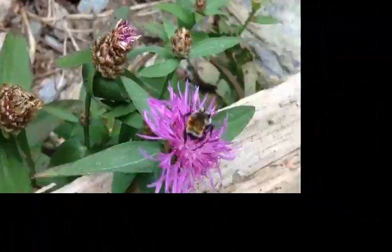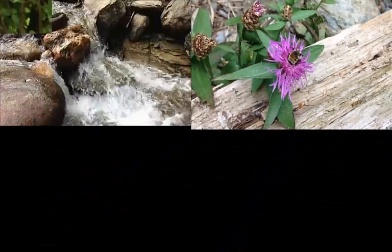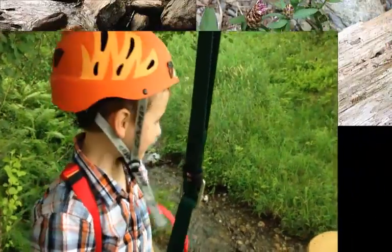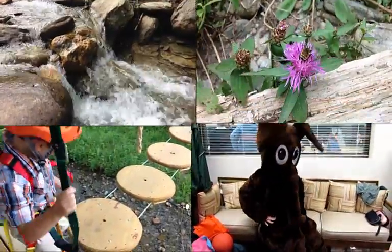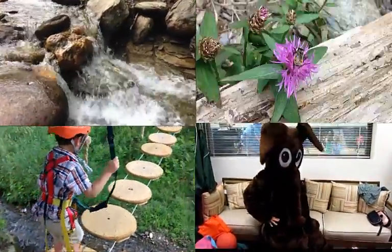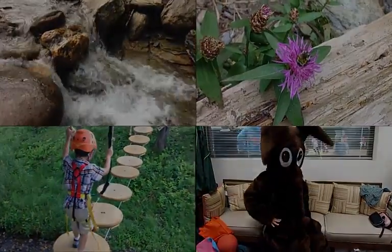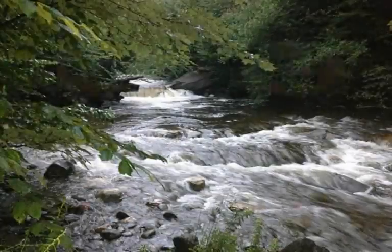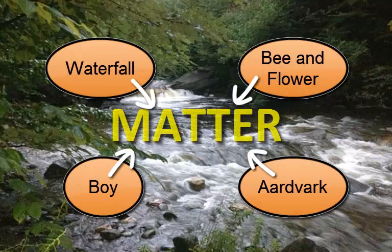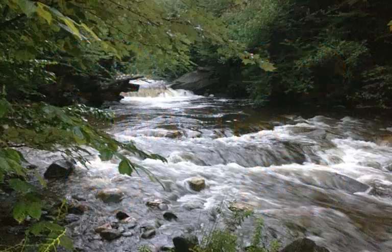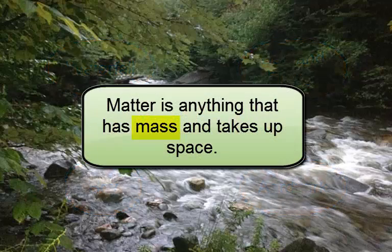What do you have in common with the waterfall, a bee and a flower, a little boy, and our aardvark? You're probably thinking that this is a trick question. It's hard to imagine that a person has anything in common with all of these objects. From a scientific point of view, you have at least one characteristic in common with these things. They're all made of matter. Matter is anything that has mass and takes up space. It's that simple.